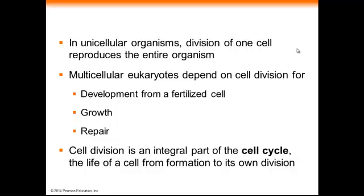In single-cell organisms, division of one cell reproduces the entire organism. But multicellular organisms, particularly eukaryotes, depend on cell division for three different purposes: development from a fertilized cell, growth, and repair. Cell division by itself is a major part of what's called the cell cycle, which is the process during which cells typically divide, and it includes a number of other activities besides the cell dividing.